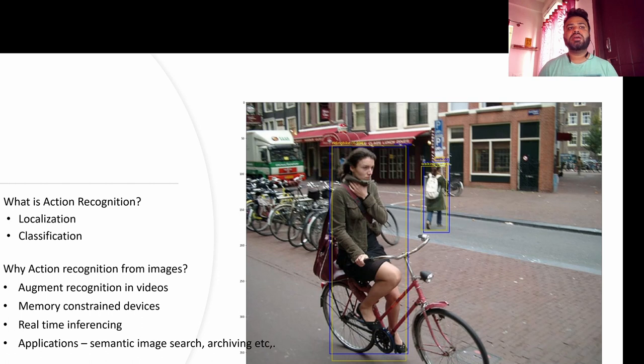There are also use cases for memory-constrained devices. With the industry moving towards IoT and computing at the edge, most devices at the edge are memory-constrained. In such cases, working with videos requires a lot of computing resources, but if recognition can happen on an image, that definitely helps. There are also use cases where real-time inferencing is required, and recognition from images will always be faster compared to videos.